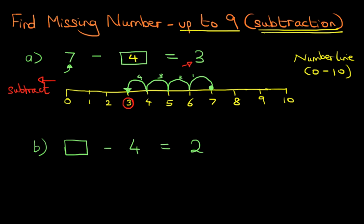7 minus 4 equals 3. Now, that one is pretty straightforward. So, when the box is after the first number, it's very simple to work through.